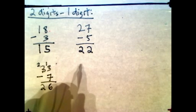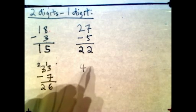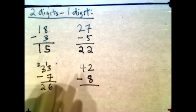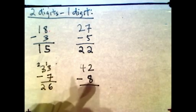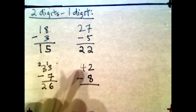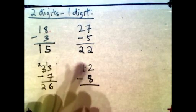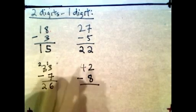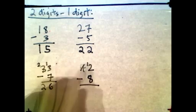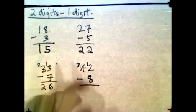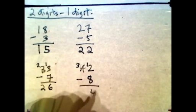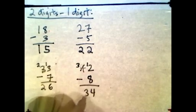Try another one: 42 minus 8. Again, 8 is bigger than 2, so you want to borrow from the 4 tens. That becomes a 3, and it's now 12. 12 minus 8 gives you 4. The answer is 34.